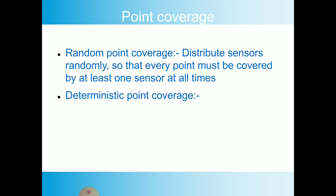There is two type of point coverage: random point coverage, distribute sensors randomly so that every point must be covered by at least one sensor at all times. And the other thing is deterministic point coverage is the same as the random point coverage but only there is a reliable point to be considered.